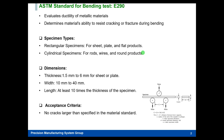For metal, as I said, we use E290. With this method we can evaluate the ductility of metallic materials and determine the material's ability to resist cracking or fracture during bending. We can use different types of specimens: rectangular specimens like sheet, plate, or flat product, or cylindrical specimens like rod, wire, or round product. The dimensions of the specimen are very important.